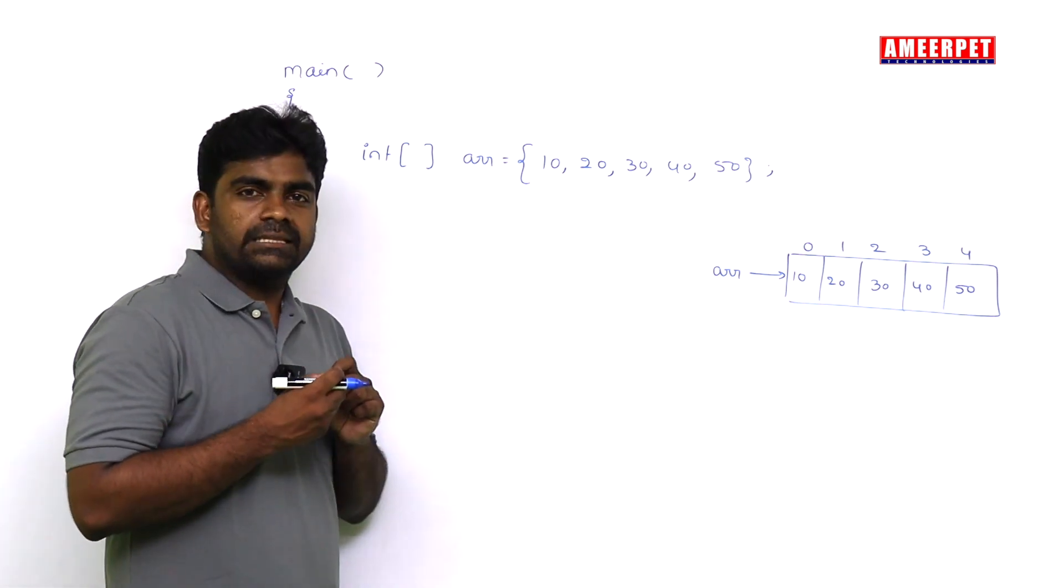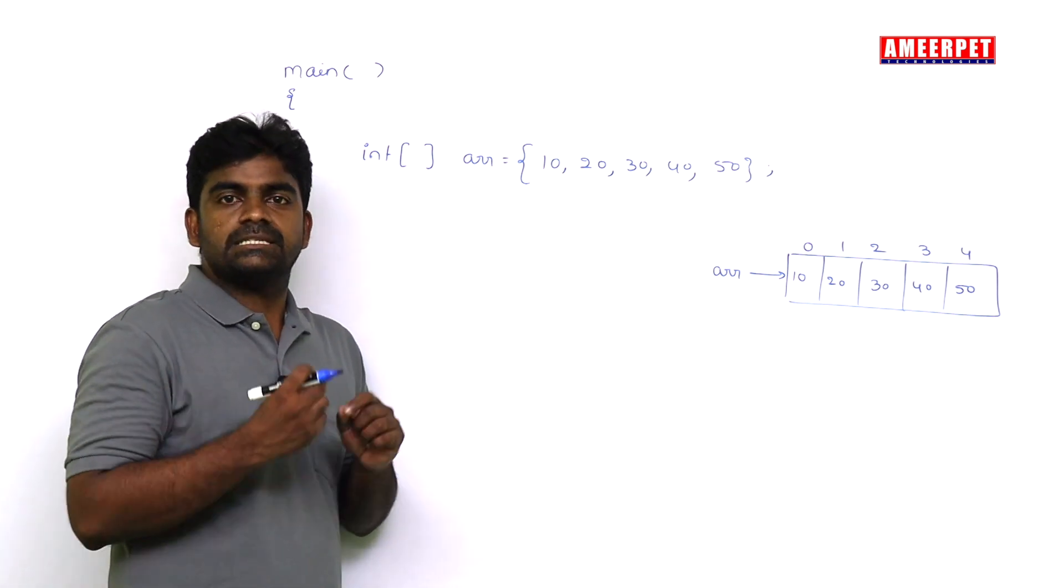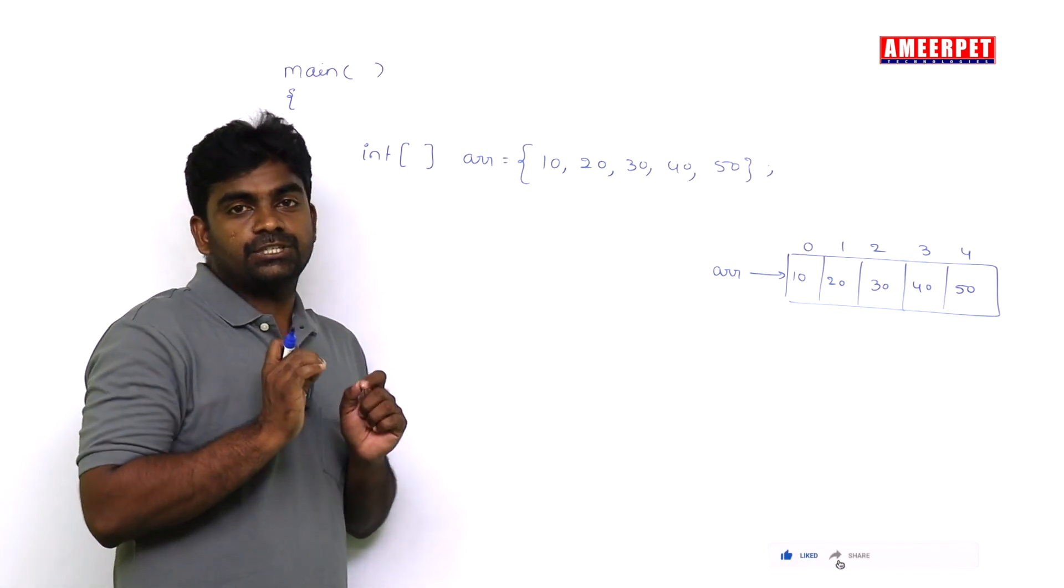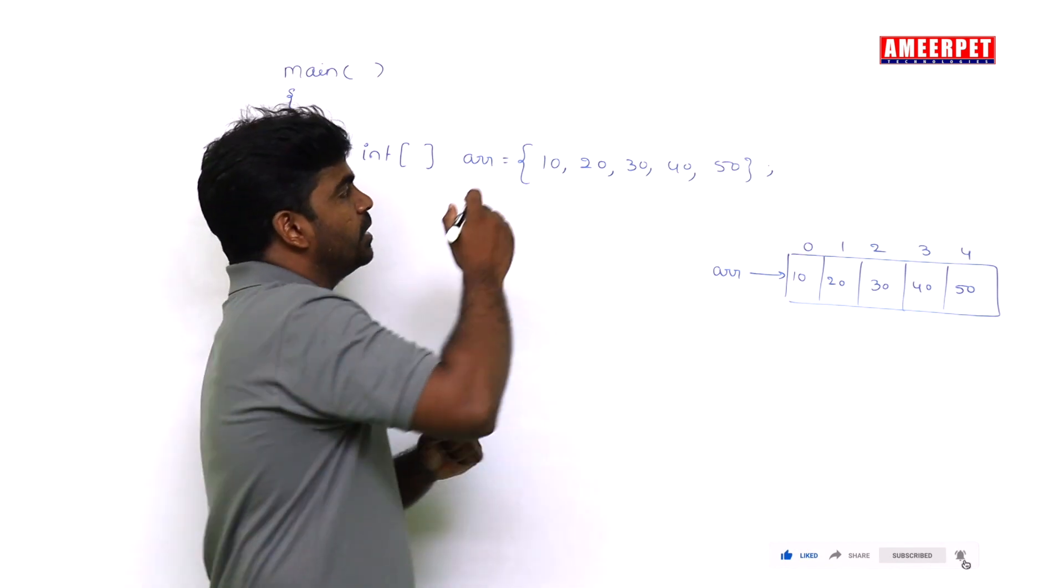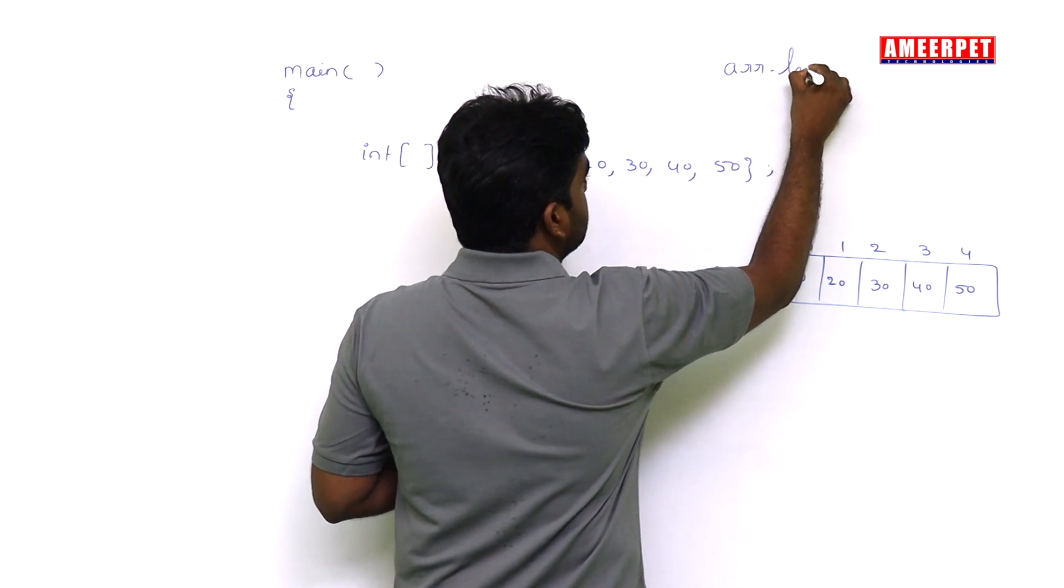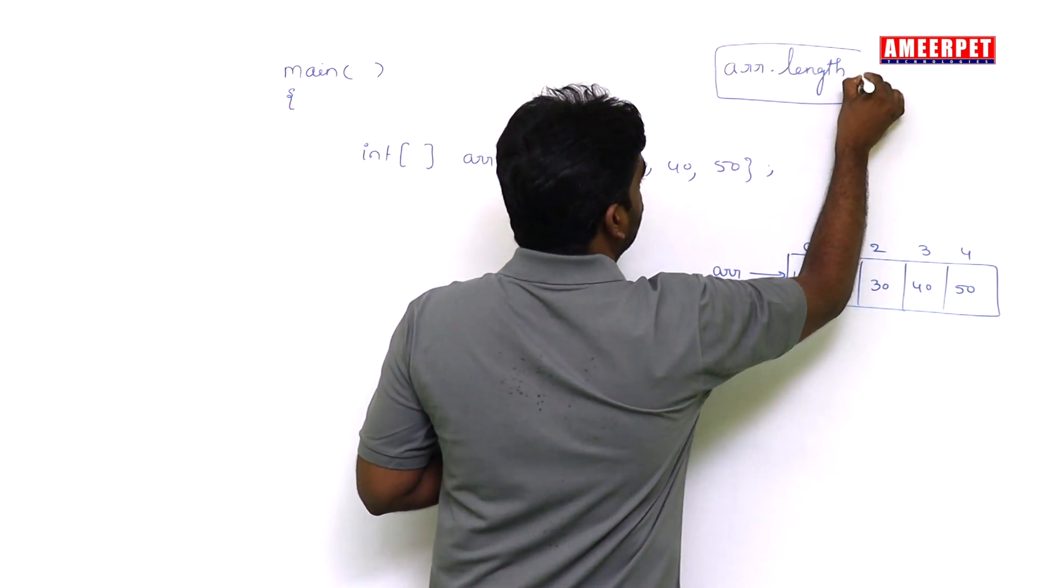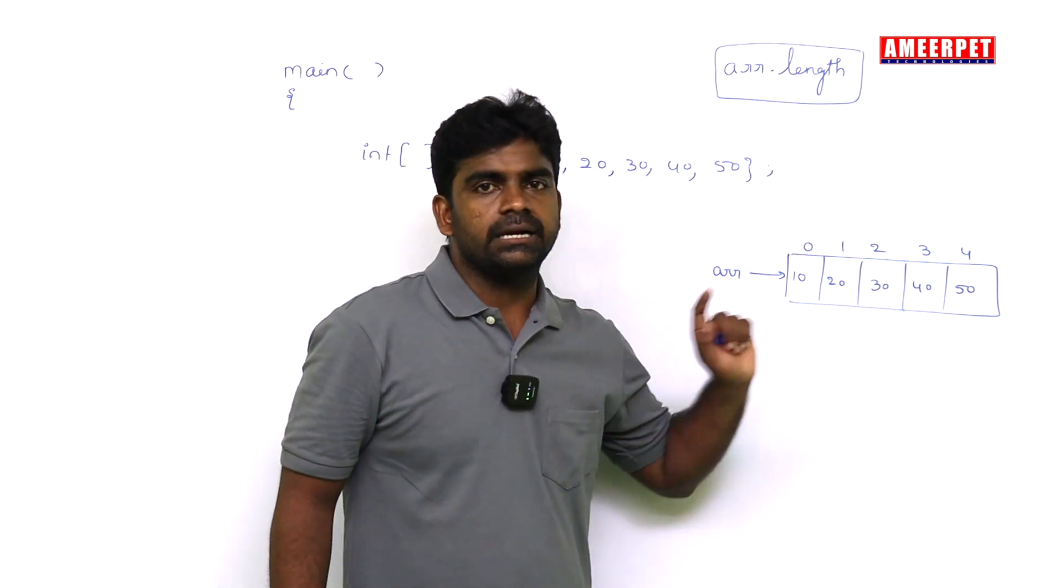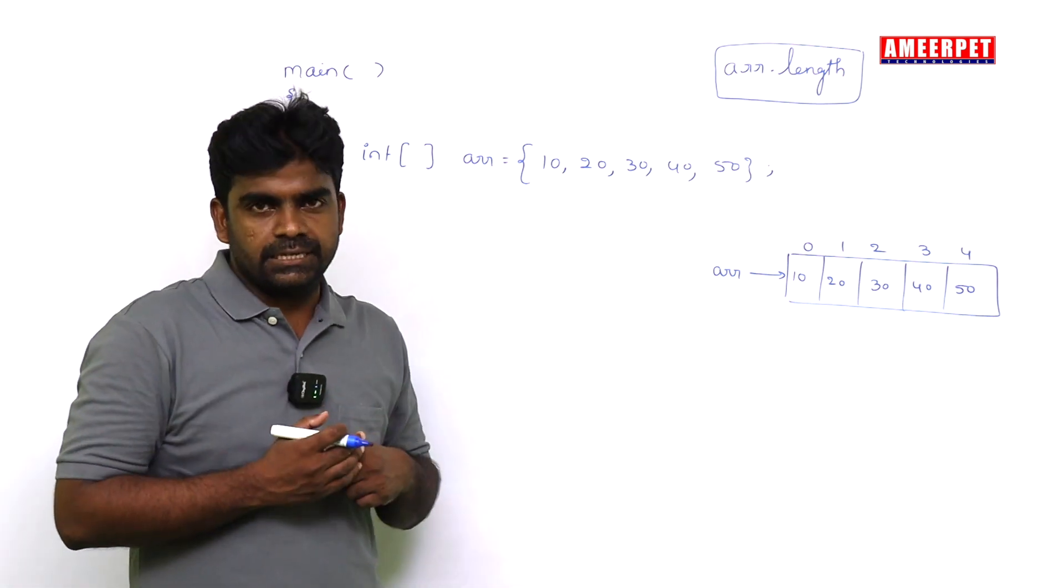First of all, how to find the length of the array? There is one predefined instance variable. We need to call it on the array object. In Java, array is an object type. When you call the instance variable length, it will give the length of the array - how many elements are present in the array.